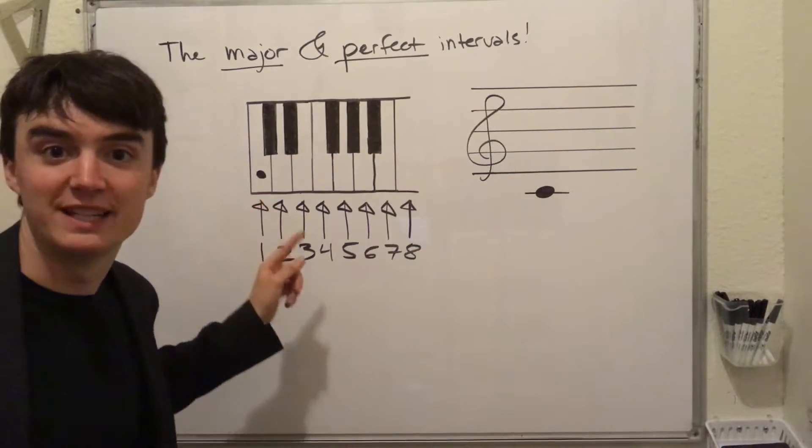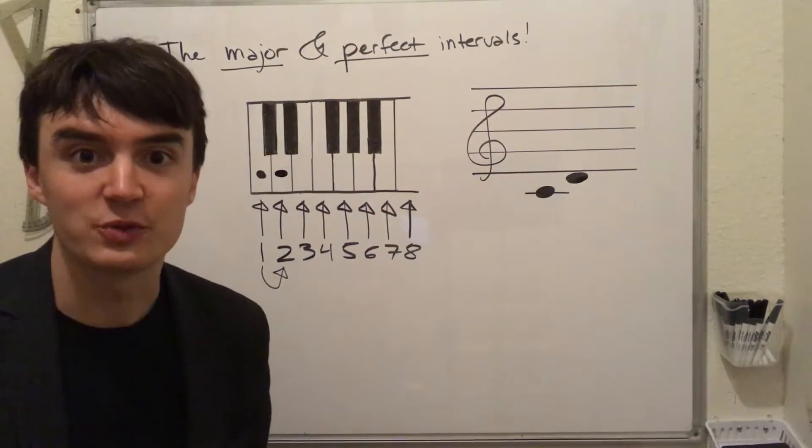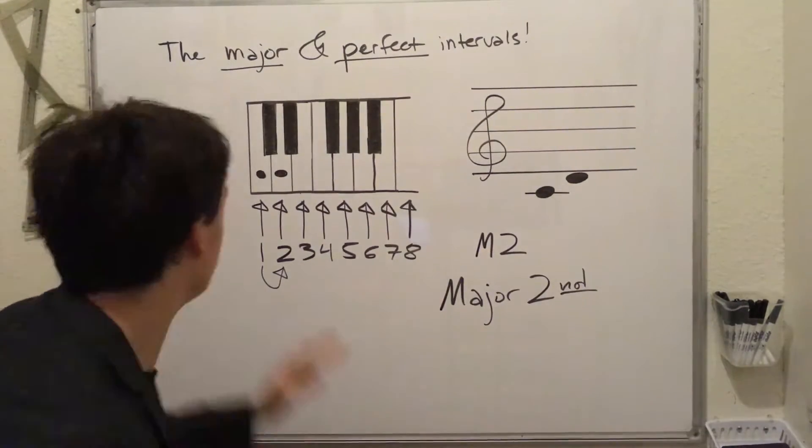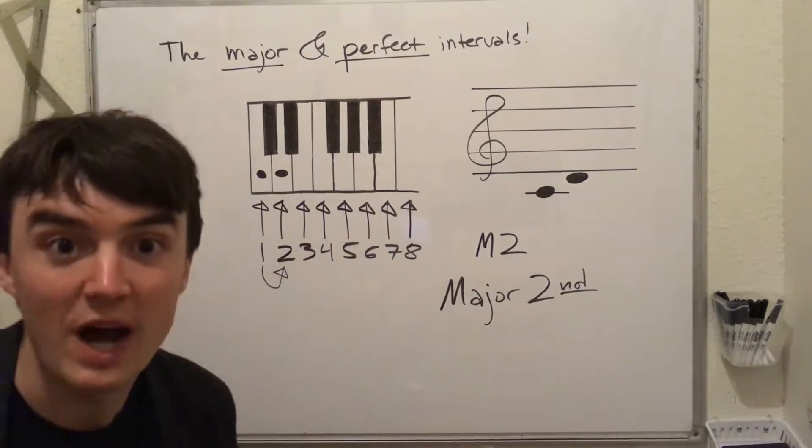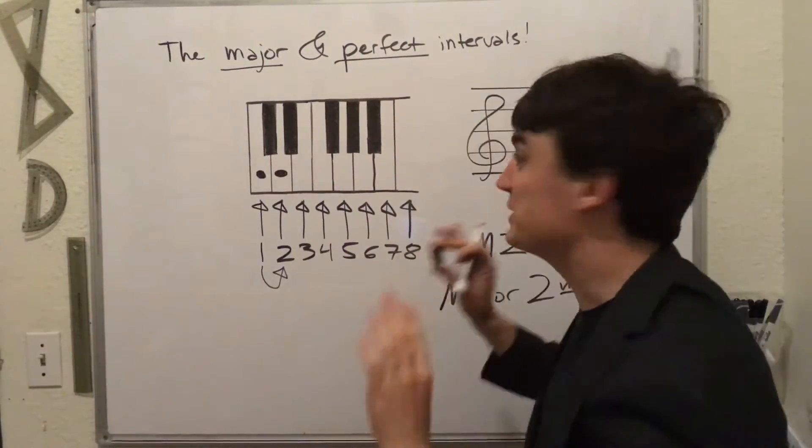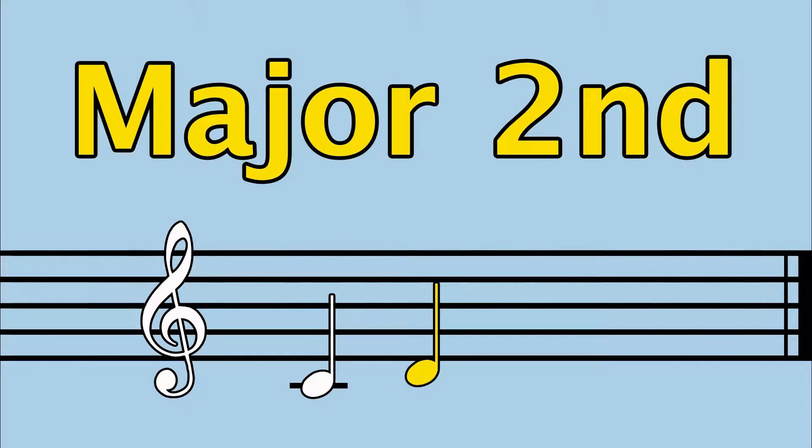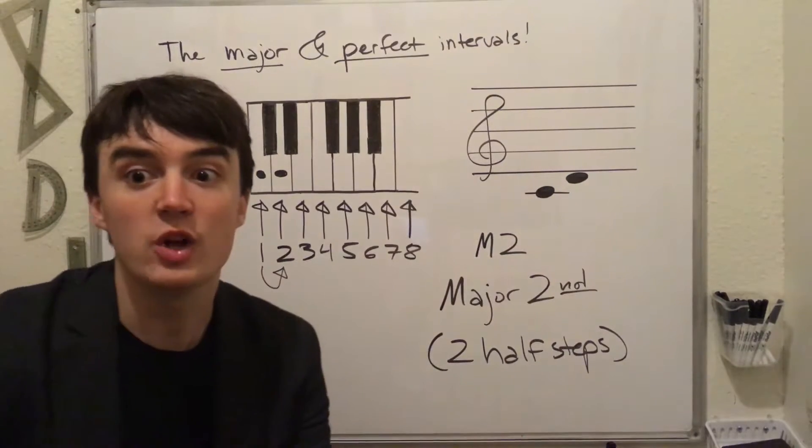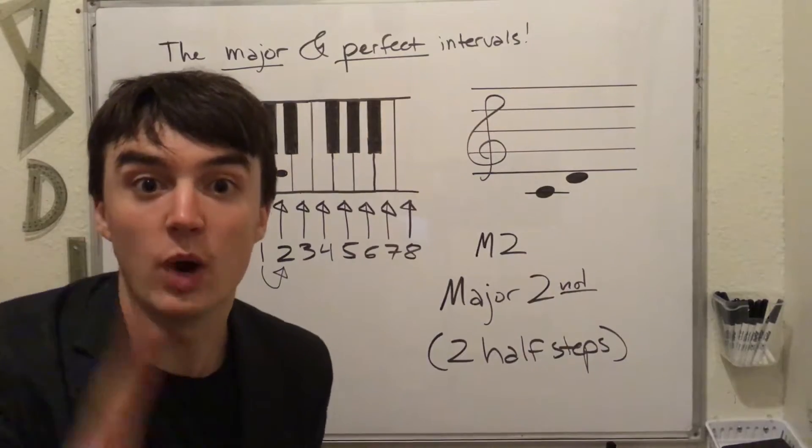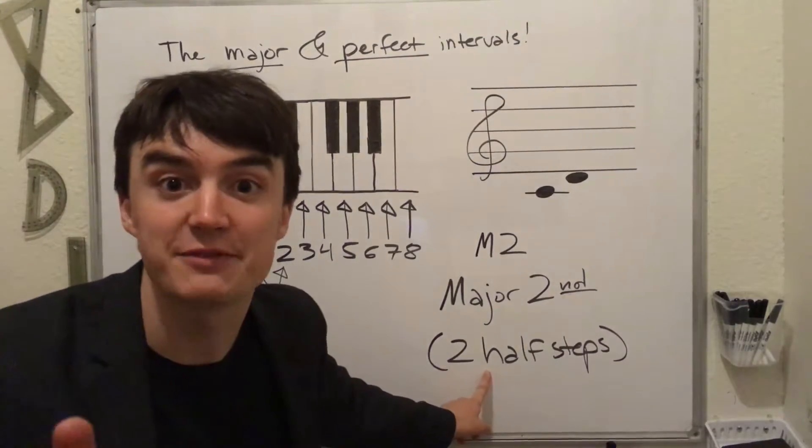Start on scale degree 1 and we go to 2, the next scale degree. In any major scale, the step from scale degree 1 to scale degree 2 is major. It's a major second. And we already know that that step is one whole step or two half steps.